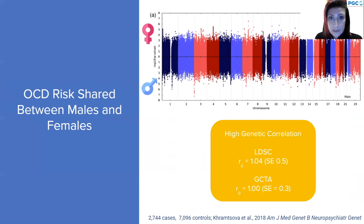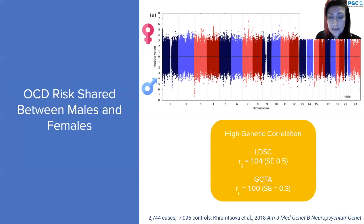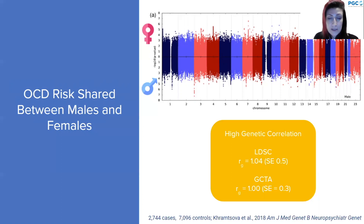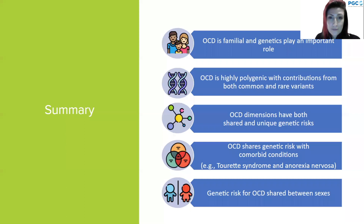Risk for OCD seems to be largely shared between males and females. A sex-stratified analysis using PGC data shows that although there are no genome-wide significant variants, there are distinct peaks between males and females. In a gene-based analysis, two genes — GRID2 and GRP135 — were significant for OCD in females only. However, when looking at genetic correlations, they are extremely high, indicating a large proportion of genetic risk is shared between sexes, with some sex-specific variants also present.